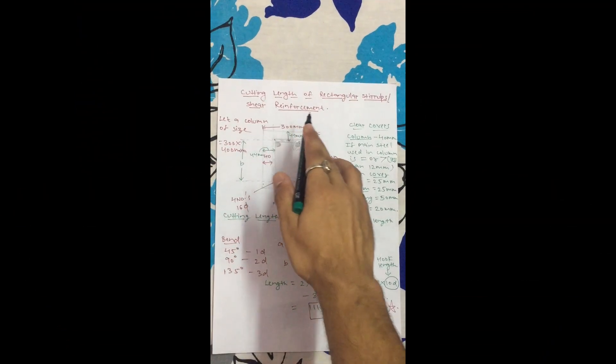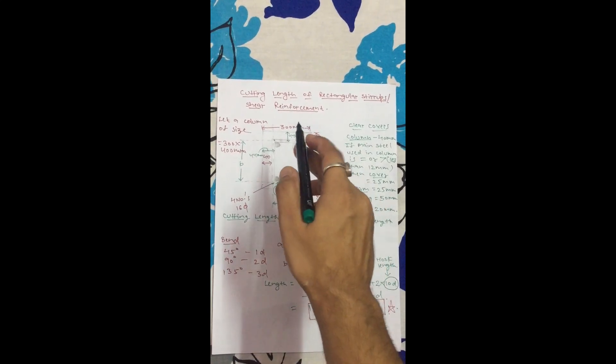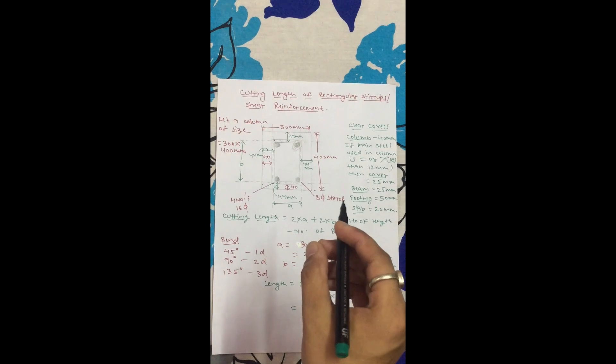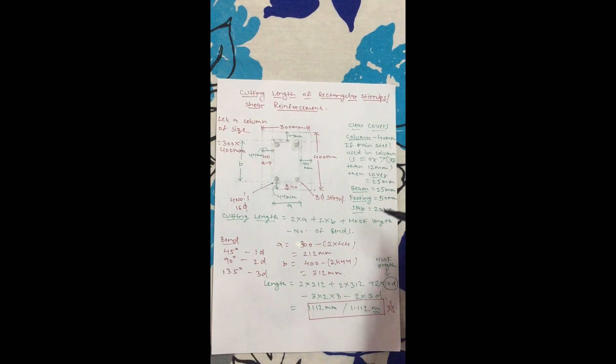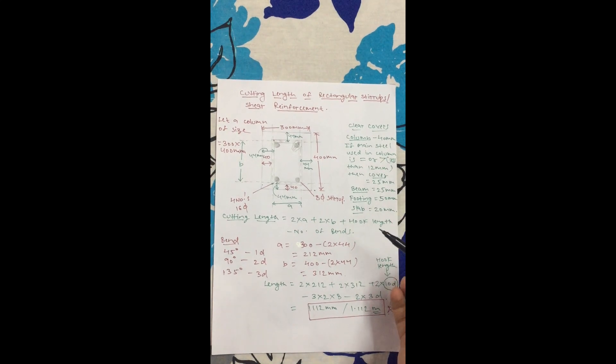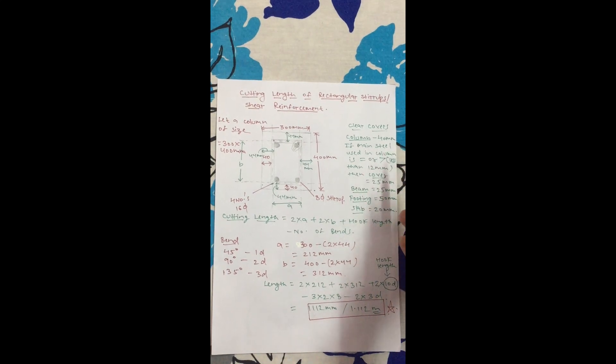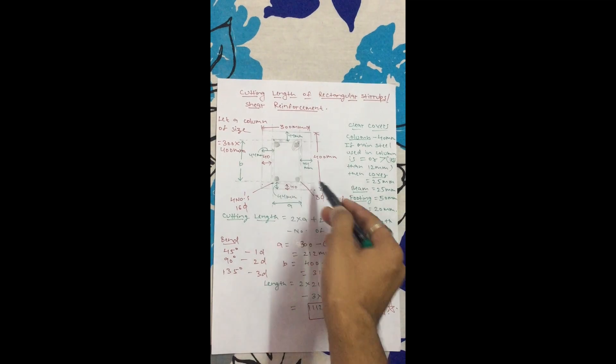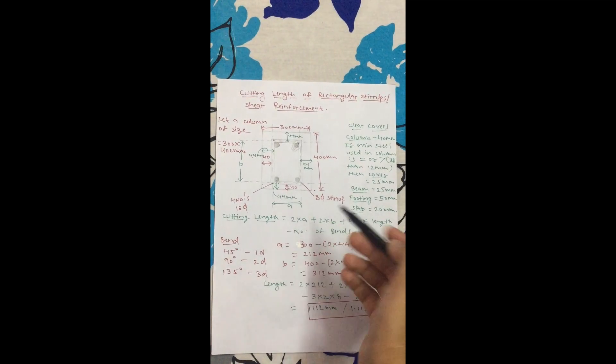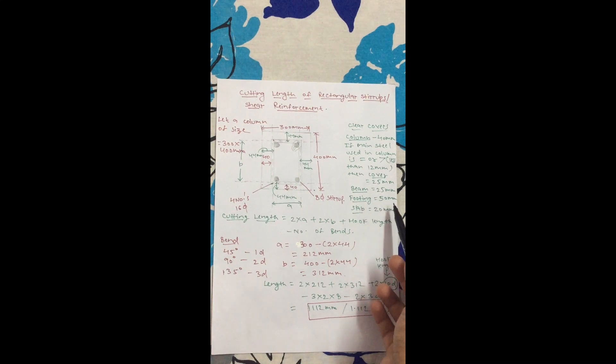So let's start with cutting length of rectangular stirrup or shear reinforcement or rings. First of all, you need to know the cover requirements. The cover in the column is 40mm. If the main steel used in the column is less than 12mm, then the cover is 25mm as per IS code. For beams it's 25mm, for footing it's 50mm, and for slab it's 20mm.